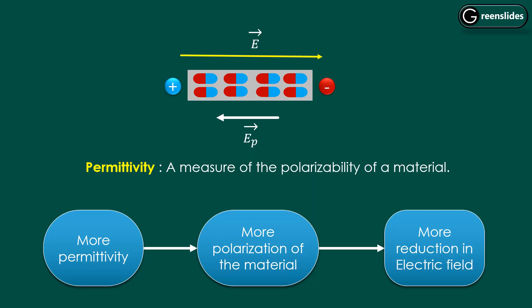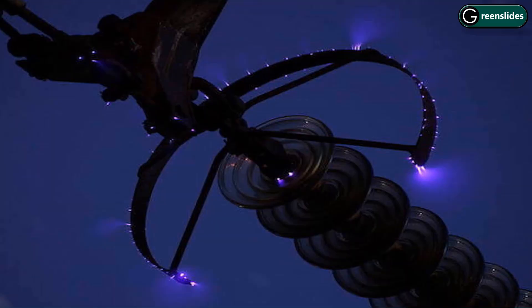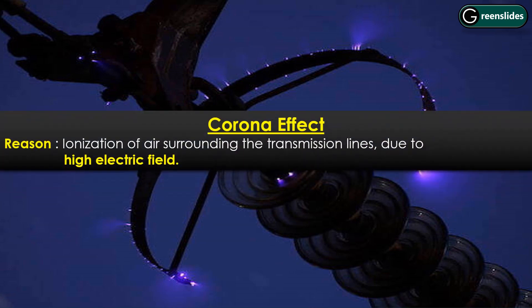Now back to our opening question: why do we see a faint violet glow around a high voltage transmission line? The reason is ionization of the air surrounding the transmission lines due to a very high electric field. A high voltage line contains an immense amount of charge, creating a very high electric field around the conductors, which causes ionization of the air — and that is why we see this faint violet glow. This effect is called the corona effect. If you want a detailed video on corona effect, drop a comment and I will make one.